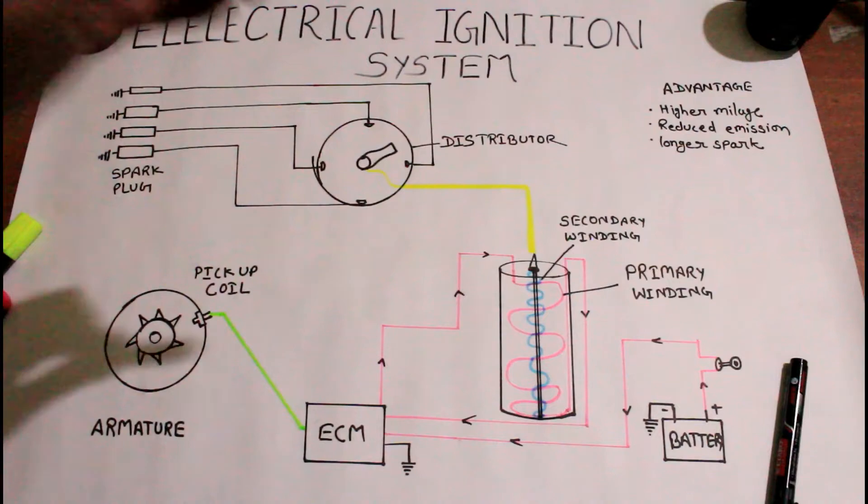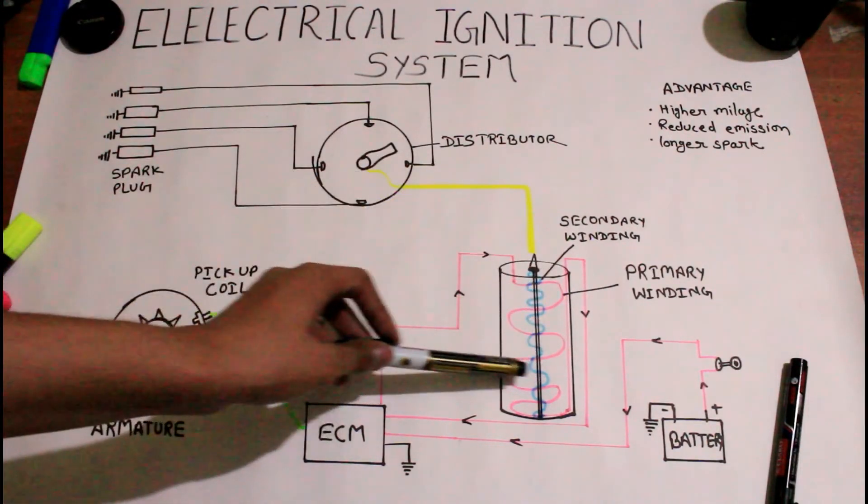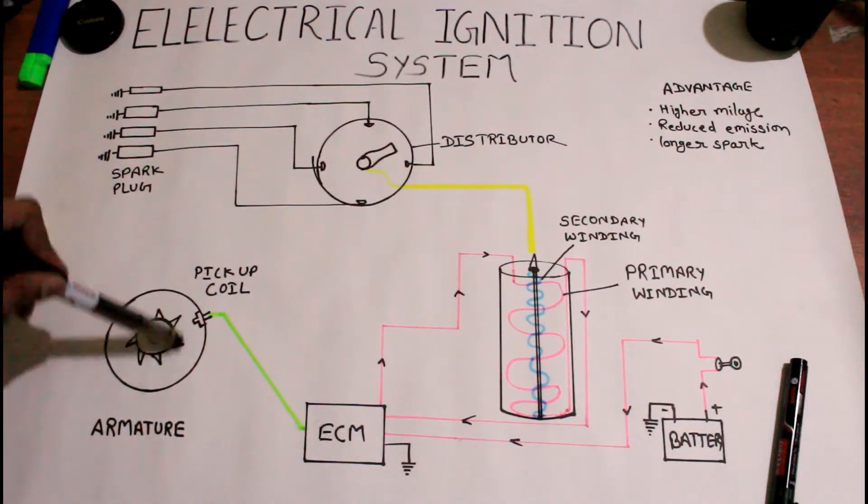For generating the EMF we have to turn off and on the current flow in the primary winding. And for that we are using the armature.